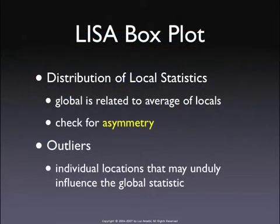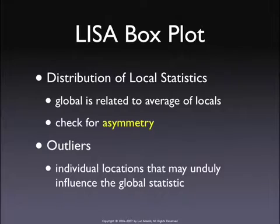Another feature is related to the fact that the local statistics add up to the global — in fact, the global is the average of the local. One device to assess how some points may have excessive influence on the global statistic is to put the individual local Moran statistics in a box plot.